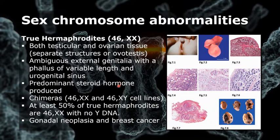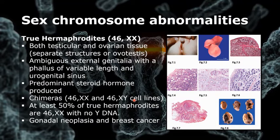Some patients are chimeras with 46 XX or 46 XY cell lines arising from the fusion of two zygotes, although not all have true hermaphroditism. At least 50 percent of true hermaphrodites are 46 XX with no Y DNA, and gonadal neoplasia and breast cancer may be present in these types of patients.